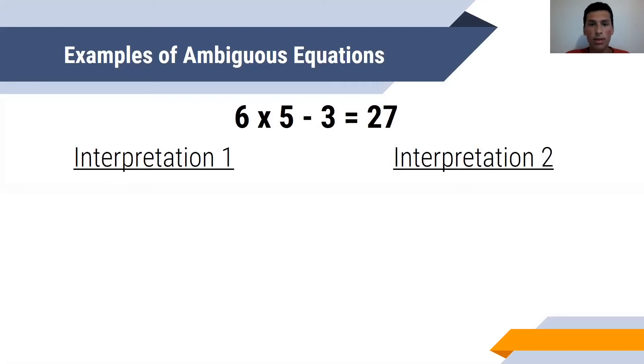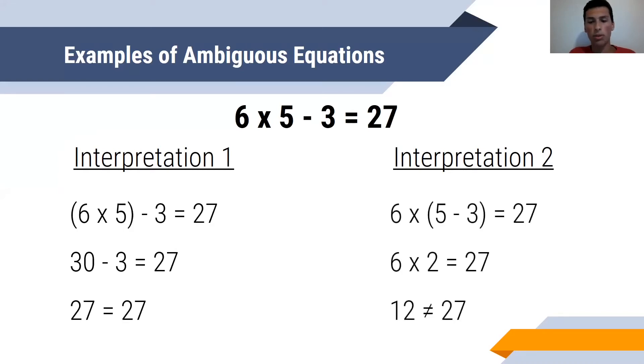Here's an example of an ambiguous equation: 6 times 5 minus 3 equals 27. The first interpretation is if we took 6 times 5 in parentheses and subtracted 3, so that would be 30 minus 3 equals 27, and then 27 equals 27. That checks out. However, the other interpretation, which is 6 times in parentheses 5 minus 3 equals 27, simplifies to 6 times 2, and then that is only 12, not 27, so this does not match the goal.